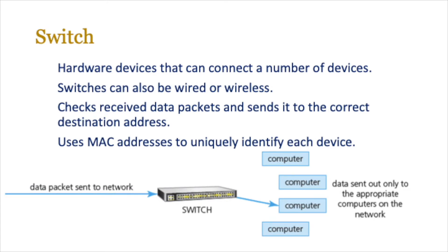If you're talking about intelligent devices, the alternative is the switch. These are devices, just like a hub, that connect a lot of different devices together, and they can also be wired or wireless. The biggest difference is that a switch will always check the received data packets and send it to the correct destination address. For that to happen, it uses MAC addresses to uniquely identify each device. Normally there's a table stored by the switch with a list of MAC addresses and where they're connected, and when a data packet is received, it checks against that list and sends it on its way.